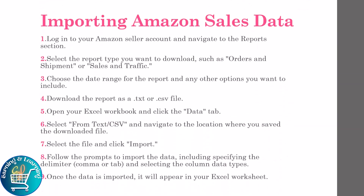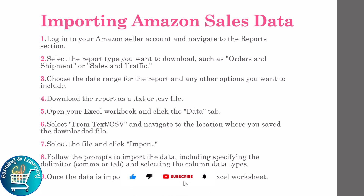Importing Amazon sales data: log in to your Amazon Seller account and navigate to the Reports section. Select the report type you want to download, such as Orders and Shipment or Sales and Traffic. Choose the date range for the report and any other options you want to include. Download the report as a TXT or CSV file.